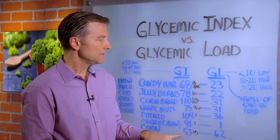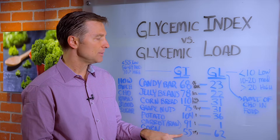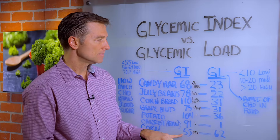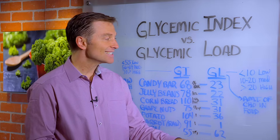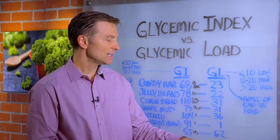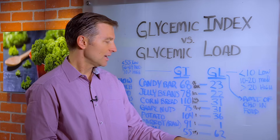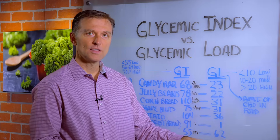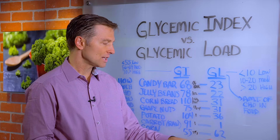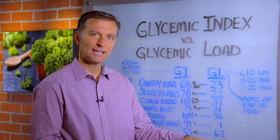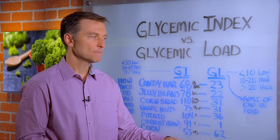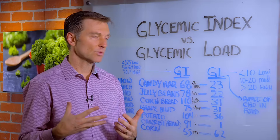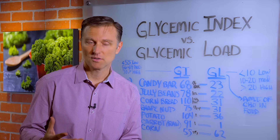Look at corn: 55 on the glycemic index, but 62 on the glycemic load. So corn is the worst thing you could possibly eat, especially related to your blood sugars.